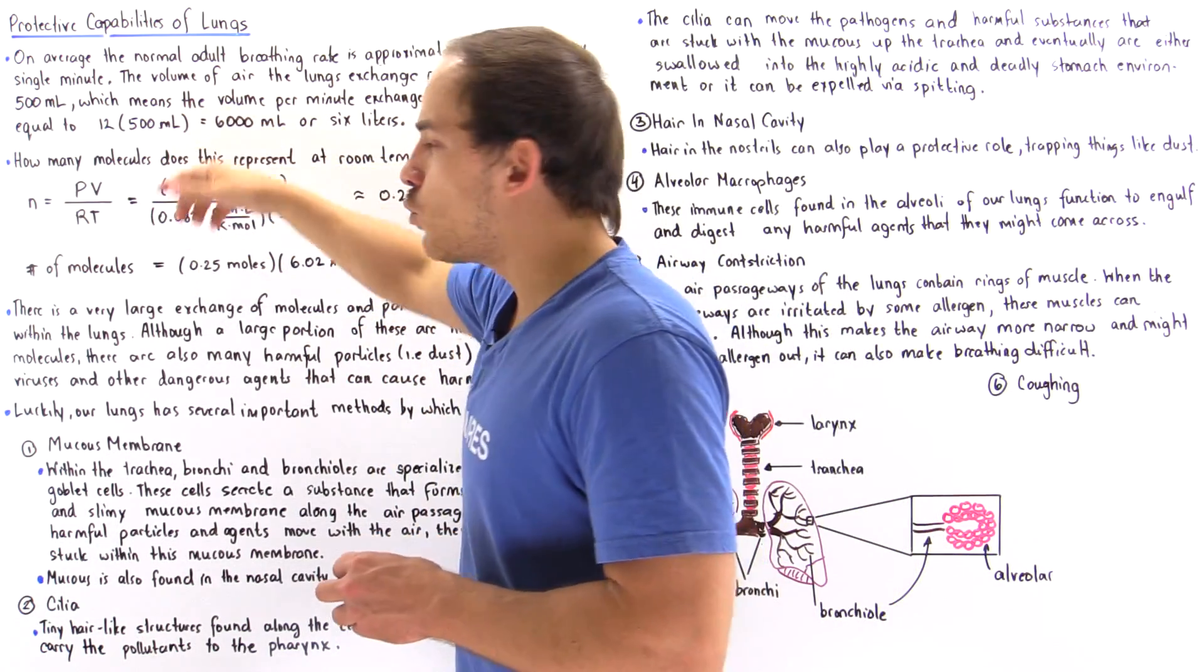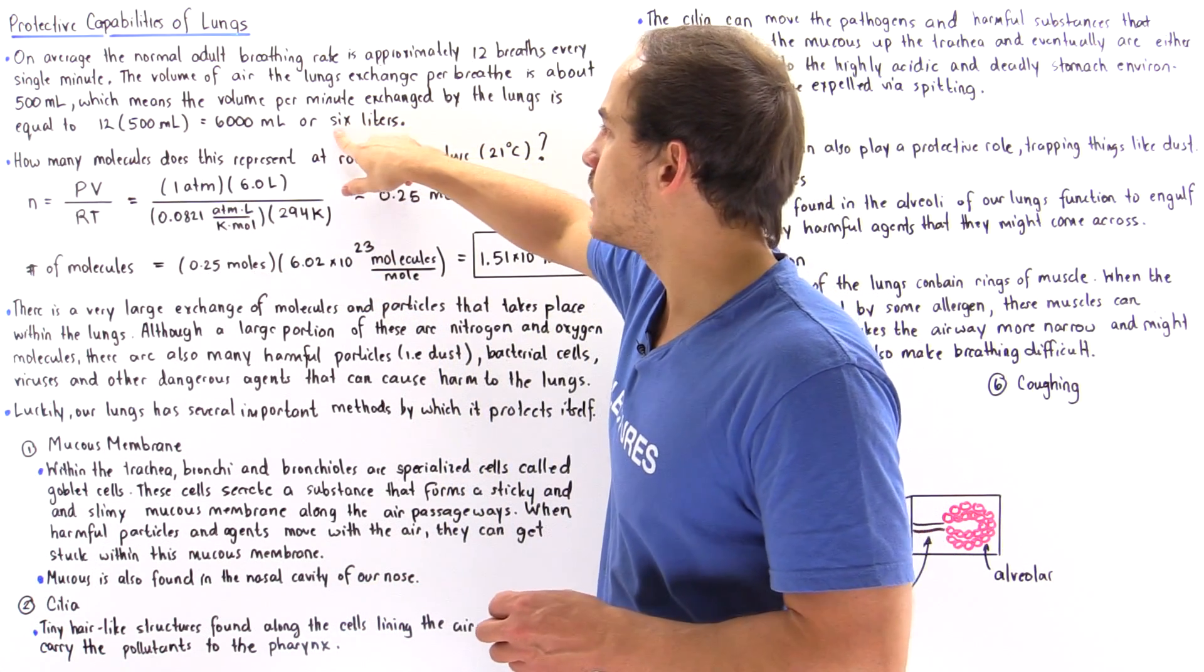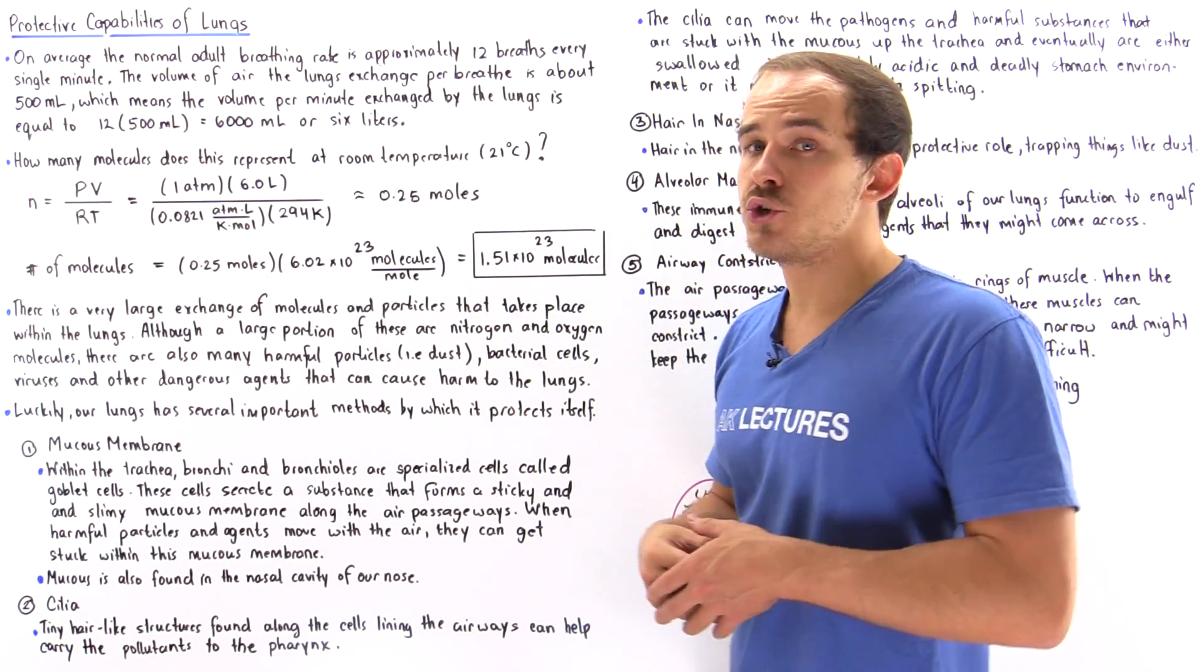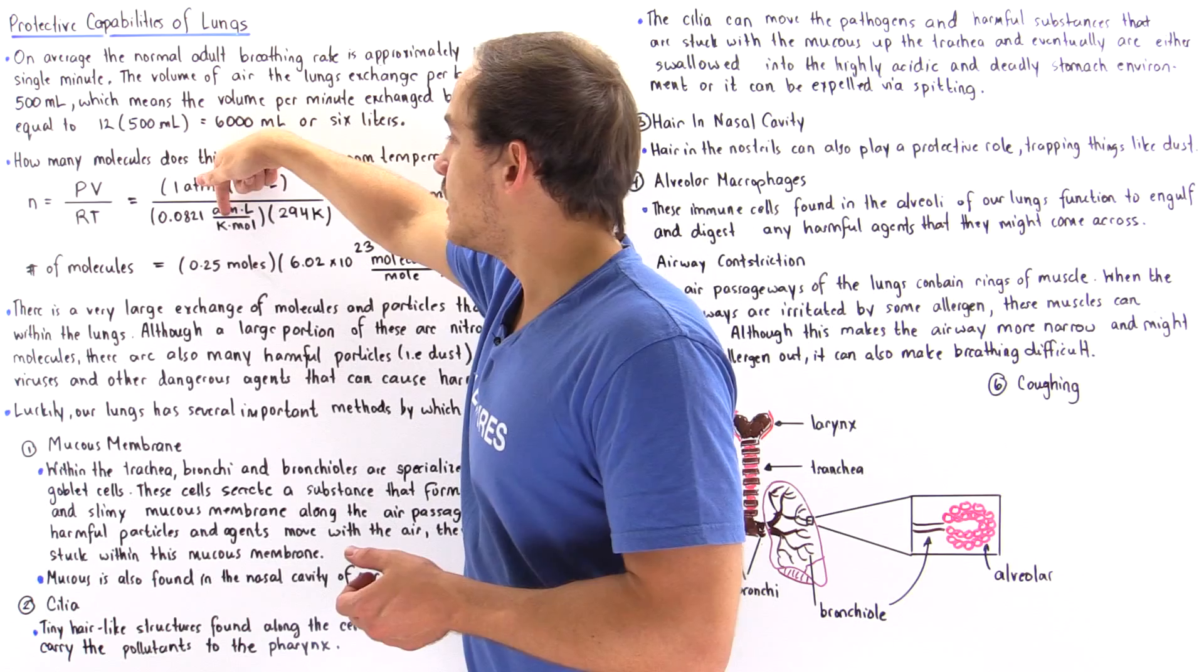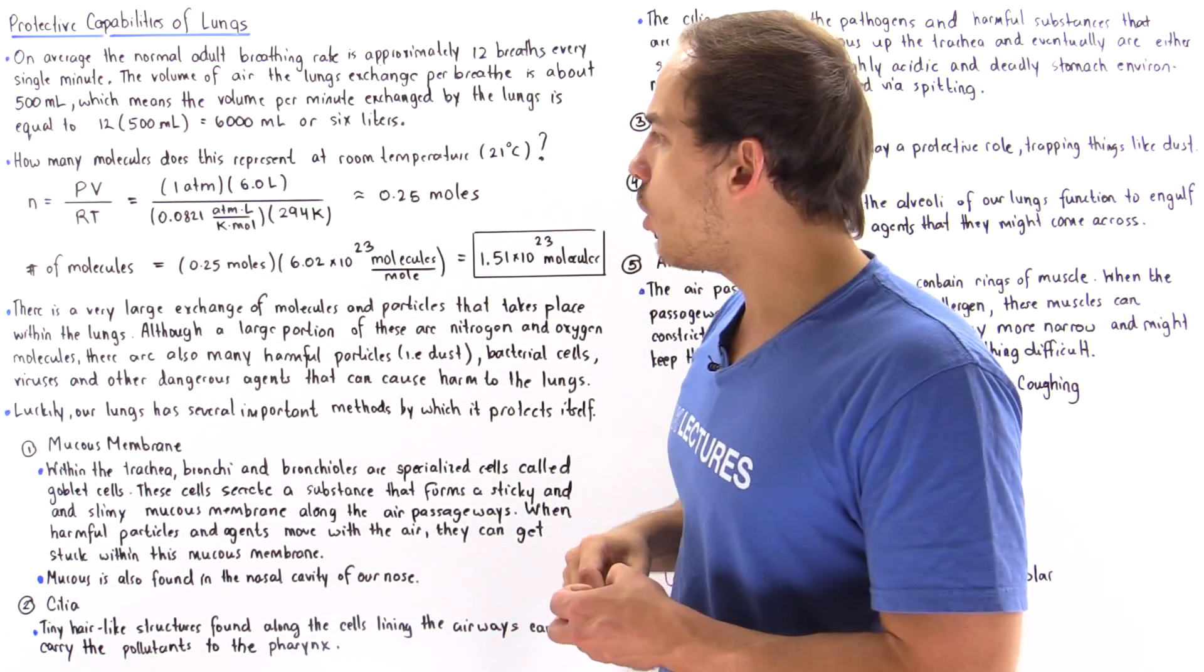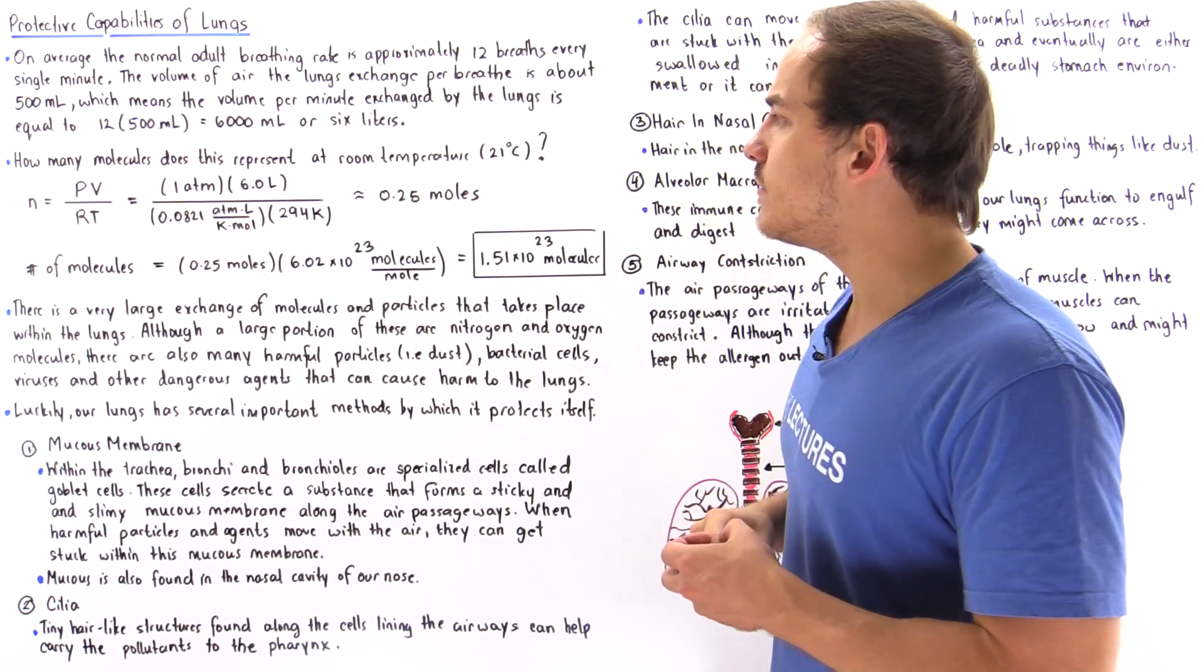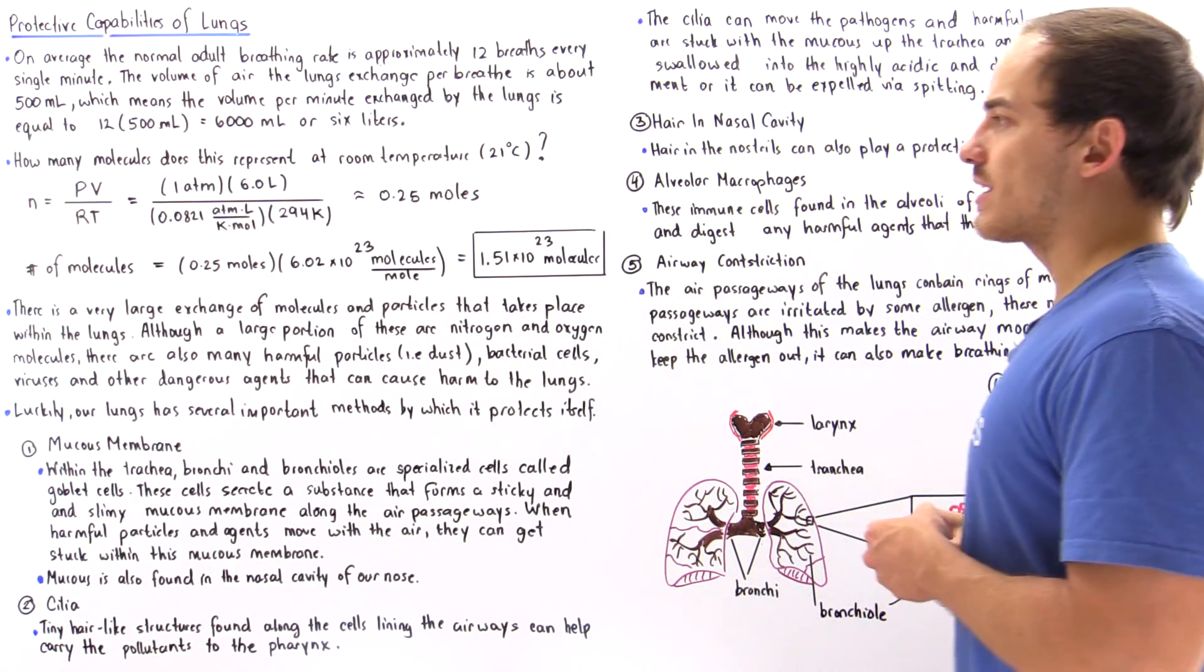The pressure we're assuming is one ATM, the volume we calculated to be six liters, the ideal gas constant is 0.0821 ATM times liters divided by Kelvin times mole, and the temperature in Kelvin is equal to 21 plus 273, which gives us about 294 Kelvins.